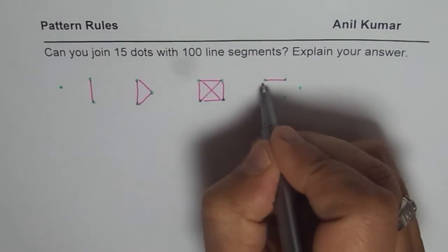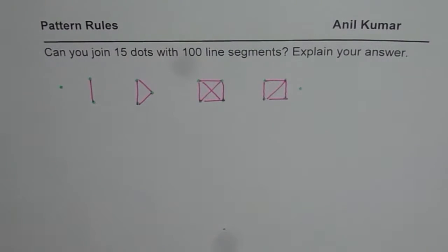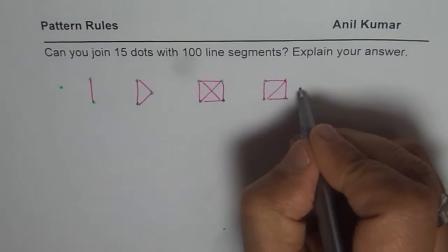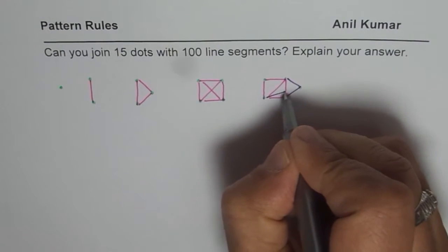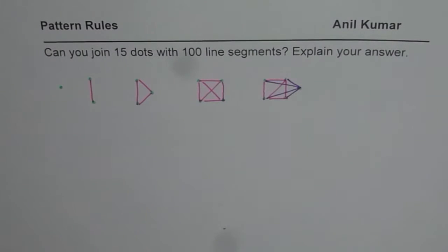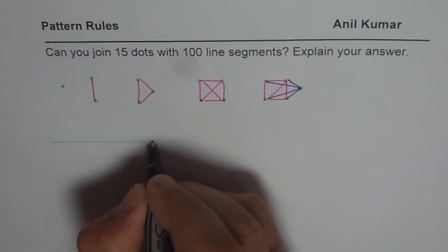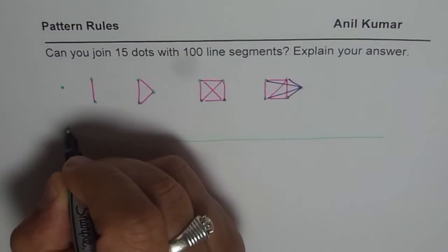Let me complete the previous figure first. You can join the extra dot with all other dots — that should give you a clue. It is very difficult to draw them all, but it is easier to figure out a pattern. To find the pattern, we can look at what happens to the number of line segments as the number of dots increases.